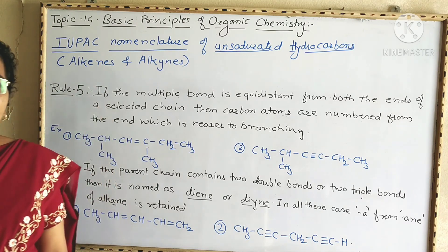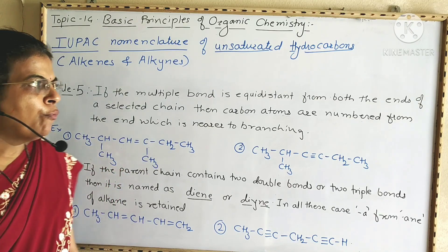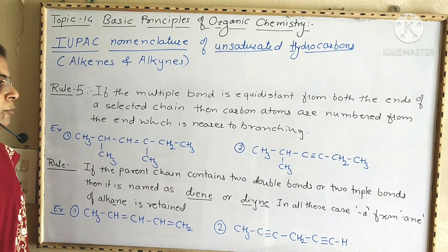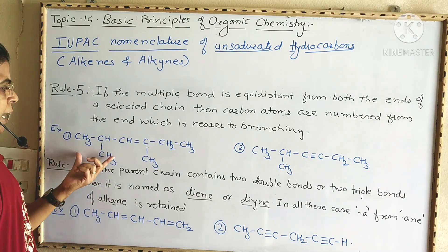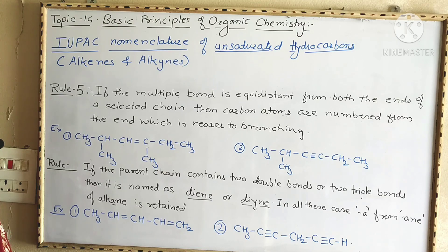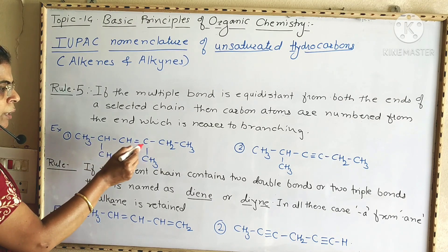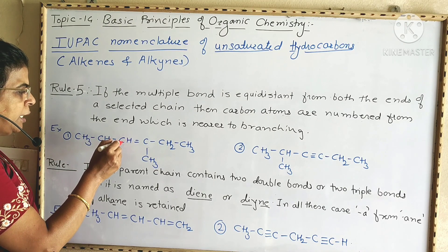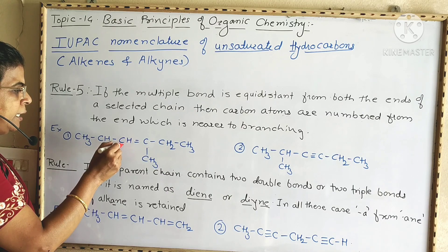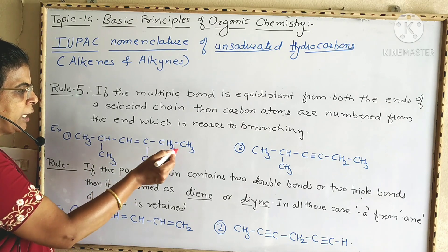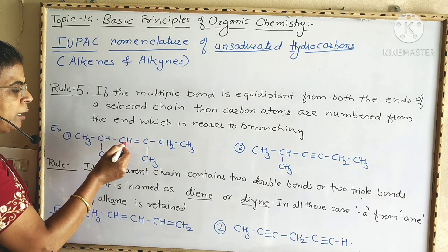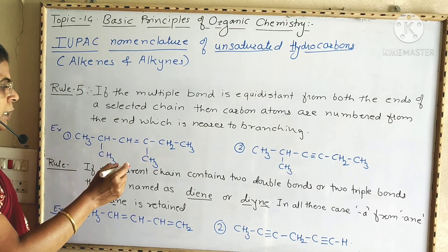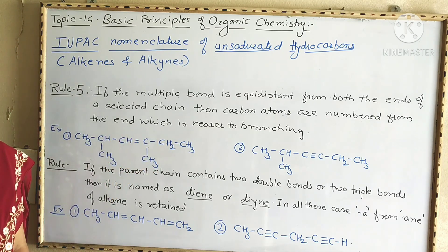Rule five: if the multiple bond is present at equidistance from both ends of the carbon chain, then carbon atoms are numbered from the end which is nearer to the branching. In the first example, with six carbon atoms, numbering from either end places the double bond at position three. Since the double bond is equidistant, we number from the end nearer to the branching — where branching occurs at position two rather than position three.